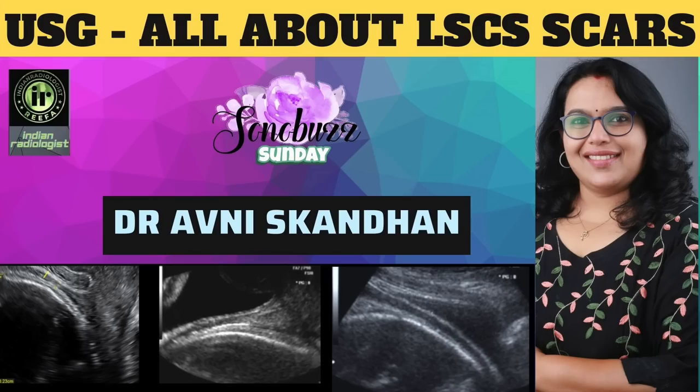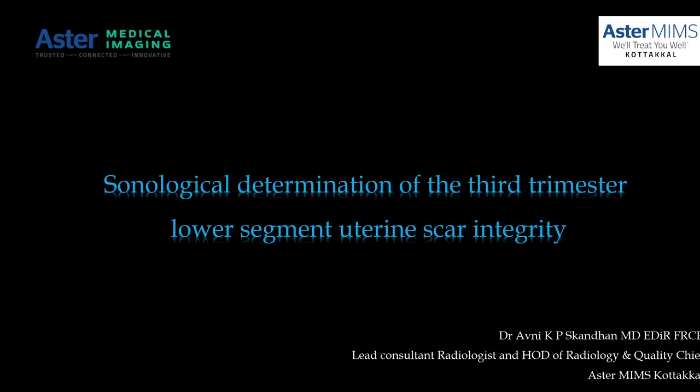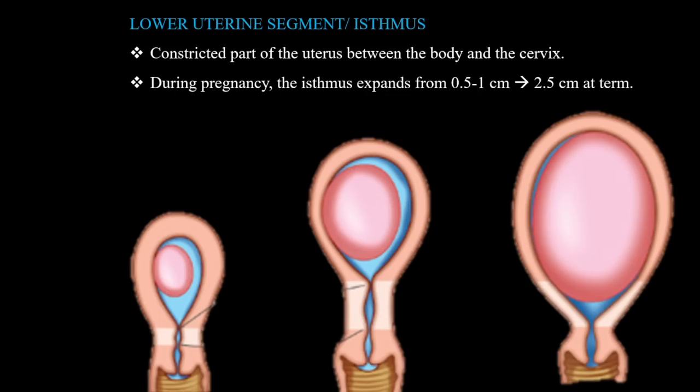Sonological determination of the third trimester lower segment uterine scar integrity. The lower segment is the constricted part of the uterus which lies between the body of the uterus and the cervix. In a normal woman, this isthmus is about 0.5 to 1 centimeter in length, but during pregnancy it starts expanding, lengthening, and thinning out. By term, the isthmus measures around 2.5 centimeters.